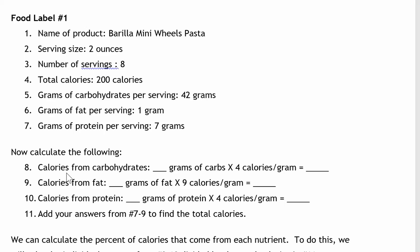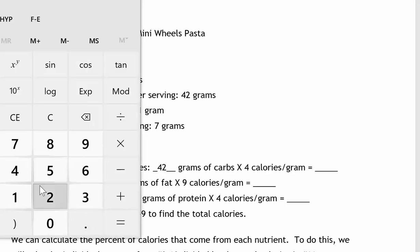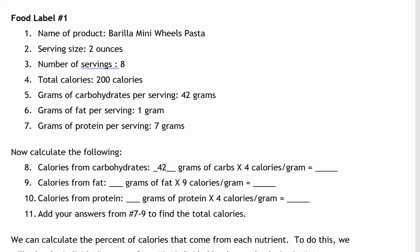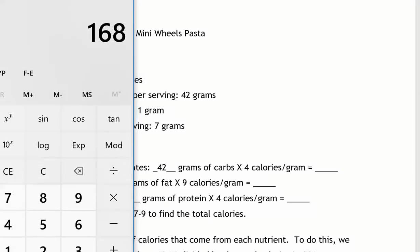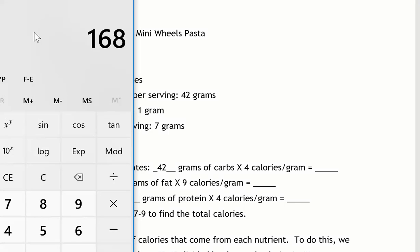We want in number eight, calories from carbohydrates. Blank grams of carbs times four calories per gram. So I look up in number five, and I see there's 42 grams of carbohydrates. Now grab my calculator. So 42 grams of carbohydrates times four calories per gram gives me 168 calories from carbohydrates.